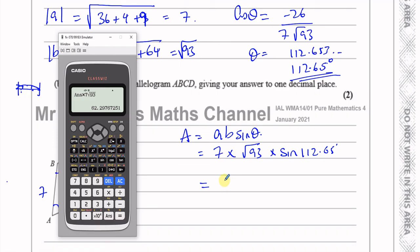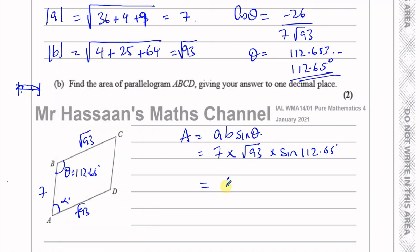And that gives us our value: 62.297. We have to then round it to one decimal place, so that's 62.3 units squared. So there's the answer for question number two.